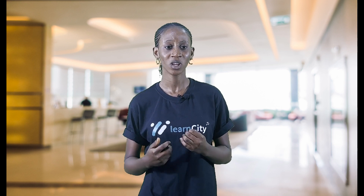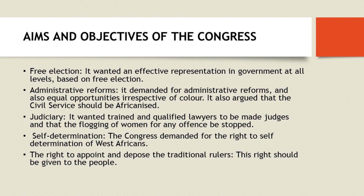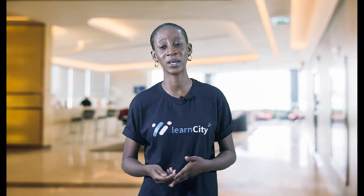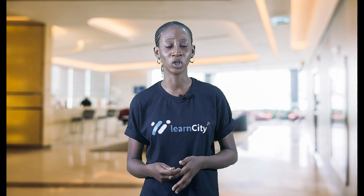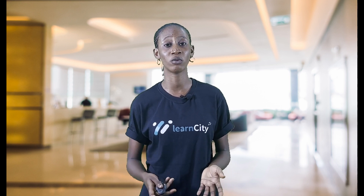Another aim and objective of this Congress was judicial reform. They wanted trained and qualified lawyers to be made judges, and they also wanted the flogging of women for any offense whatsoever to be stopped.